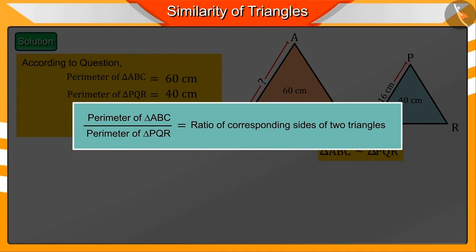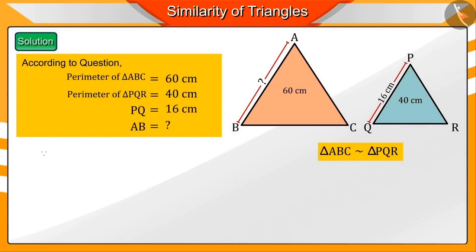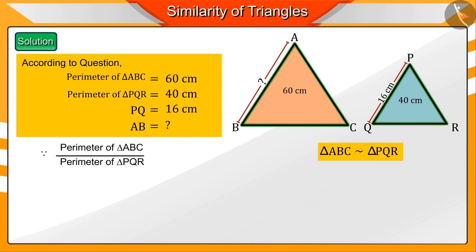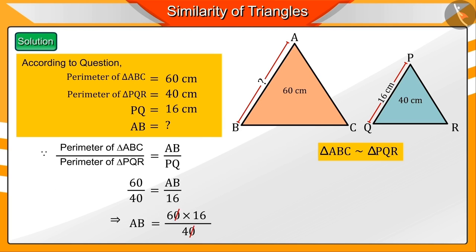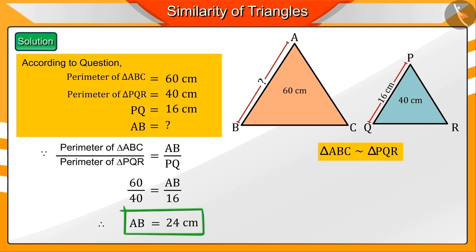We already know that the ratio of perimeters of similar triangles is equal to the ratio of their corresponding sides. Therefore, the ratio of perimeters of triangles ABC and PQR is equal to the ratio of their corresponding sides AB and PQ. Substituting all the known values and solving, we get AB is equal to 24 cm, which is our answer.